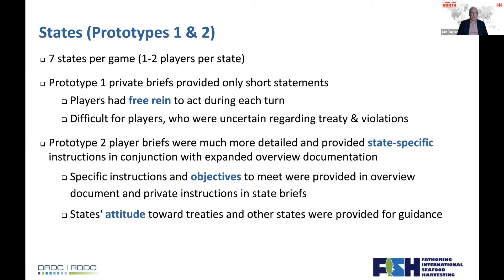We had seven nation states represented within the game, either played by one player solo or two players as a team. In Prototype 1, states were given very simple direction and players were uncertain what to do — they didn't feel they had a rich enough context to know how to play. In Prototype 2, we provided much better information, including background context and more specific instructions about what they were trying to do — their policy lines in the ice and attitudes towards other countries.